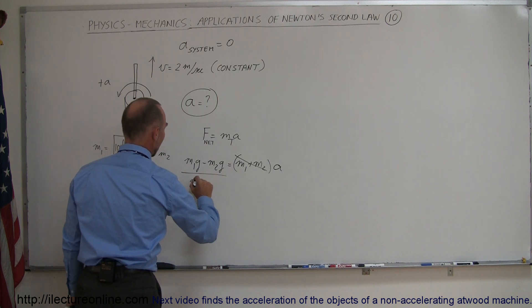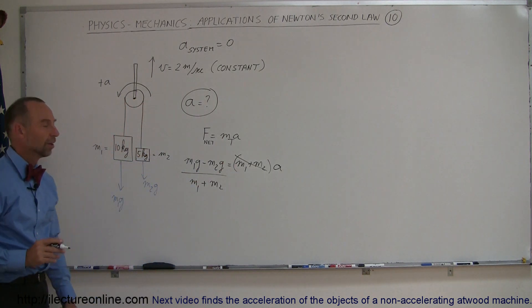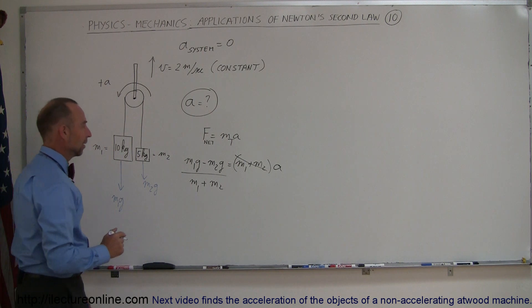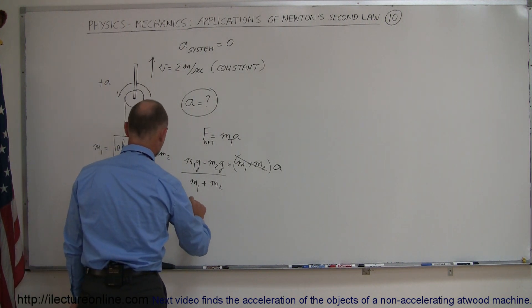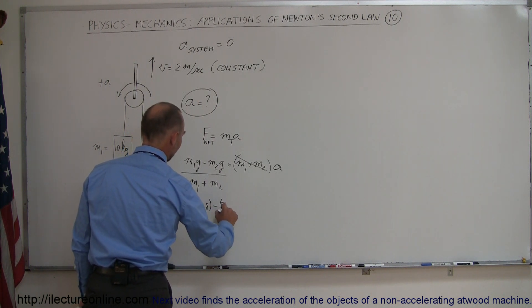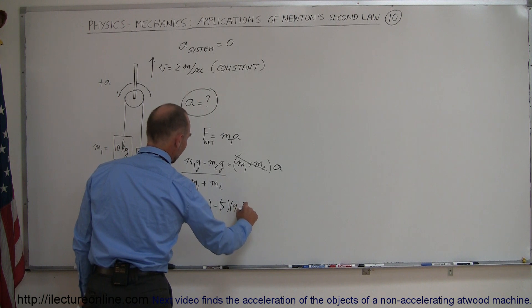dividing both sides by M1 + M2. And now we have the traditional acceleration equation for the Atwood machine. So again, we can say that this would be 10 × 9.8 - 5 × 9.8, all divided by 10 + 5.